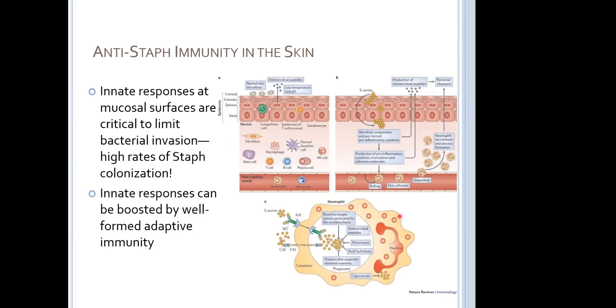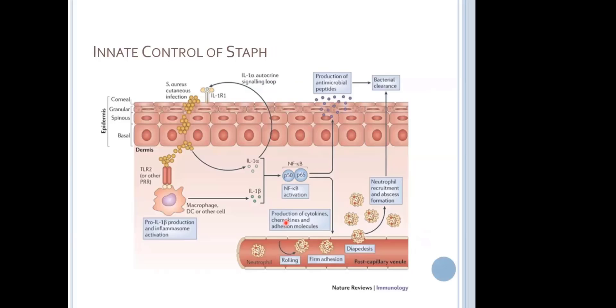The neutrophil is going to try to kill the staph. They'll eat the staph to some extent. They will also release outside their cells reactive oxygen species, antimicrobial peptides, proteinases, acid hydrolases. All of these are redundant pathways that are going to try to just destroy this bacteria, but are also going to make your skin hurt a lot and kill a lot of your local cells. And you see here an antibody—we're going to talk about how the adaptive immune response can further potentiate this anti-staph response.